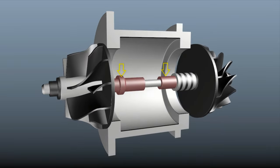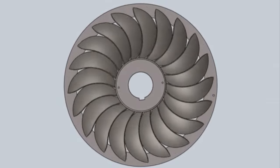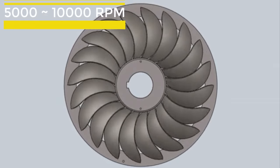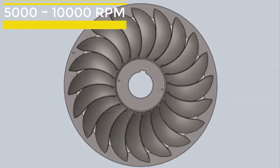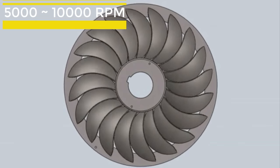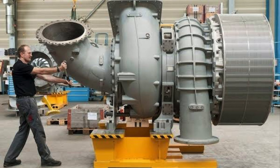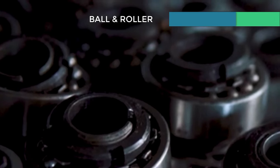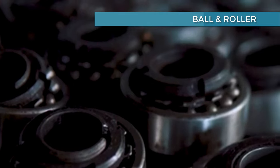The shaft is carried on bearings which helps the turbocharger to rotate at extremely high speed of about 5,000 to 10,000 rpm depending on the size of the turbocharger. The bearings are usually ball and roller type.